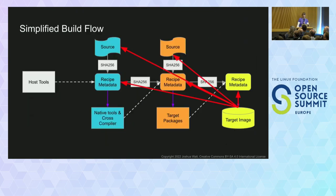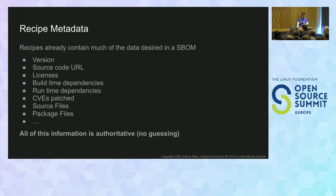That's a lot of information flowing through a small supply chain: the build tools, all the packages, and the final image are all elements that could potentially have been attacked at some point. The recipe metadata has a lot of the information needed for generating an SBOM today, and the debug information has the other pieces. A lot of Yocto projects have already put in SPDX license identifiers, so you have that information to pull from as well.